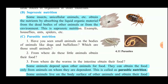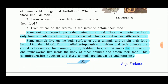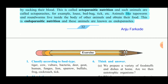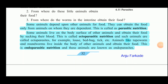Parasitic nutrition is when some animals depend on other animals for food and can only obtain food from the animals on which they are dependent. Animals that live on the body surface of other animals and obtain food by sucking their blood exhibit ectoparasitic nutrition — such animals are called ectoparasites, for example lice, bedbugs, and ticks. Animals like tapeworms and roundworms live inside the body of other animals to obtain food — this is endoparasitic nutrition, and these animals are known as endoparasites. With this, the chapter is clear.